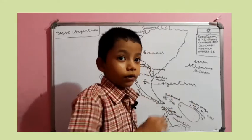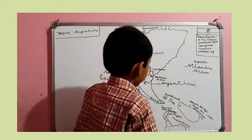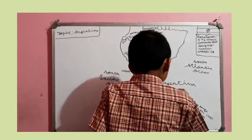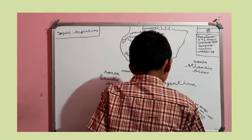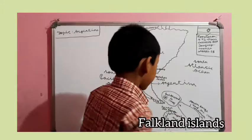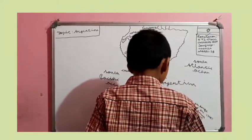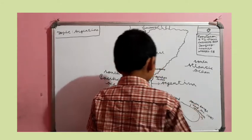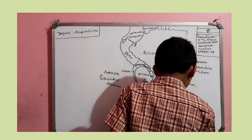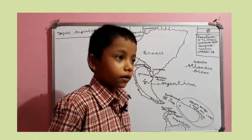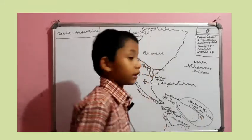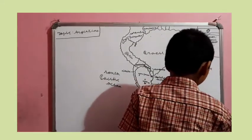Argentina borders the South Atlantic Ocean. But Argentina is near to the Falkland Islands, which is a part of the UK. Argentina is also far away from South Georgia and the Sandwich Islands, which is a part of the UK as well.